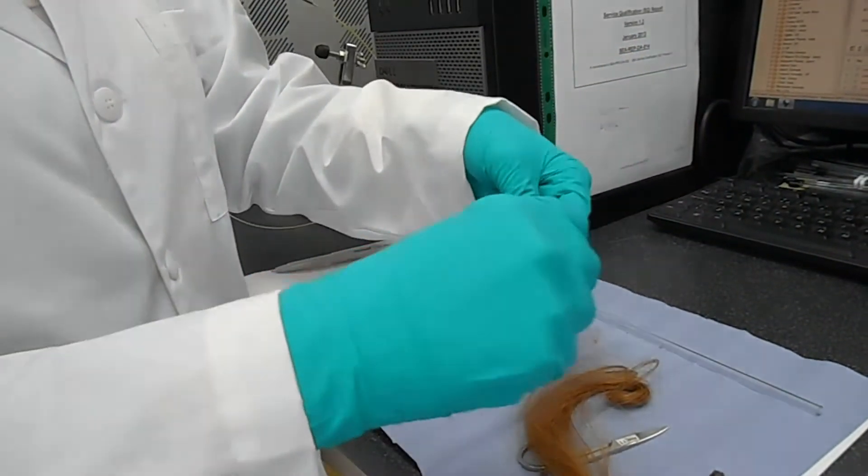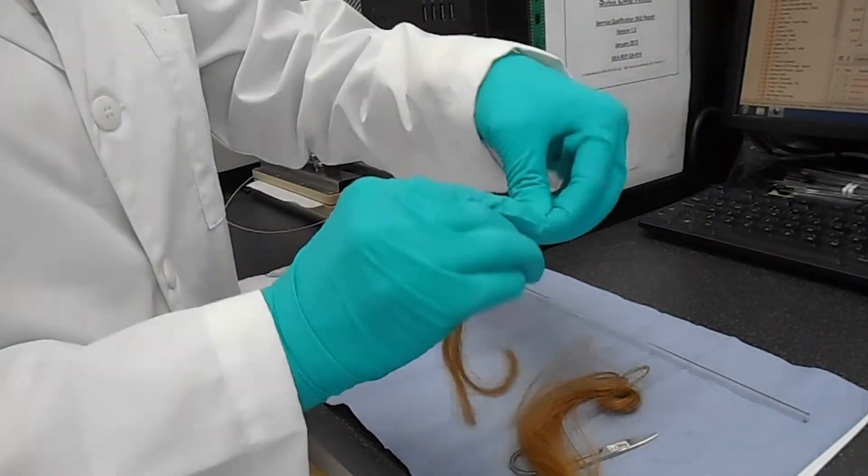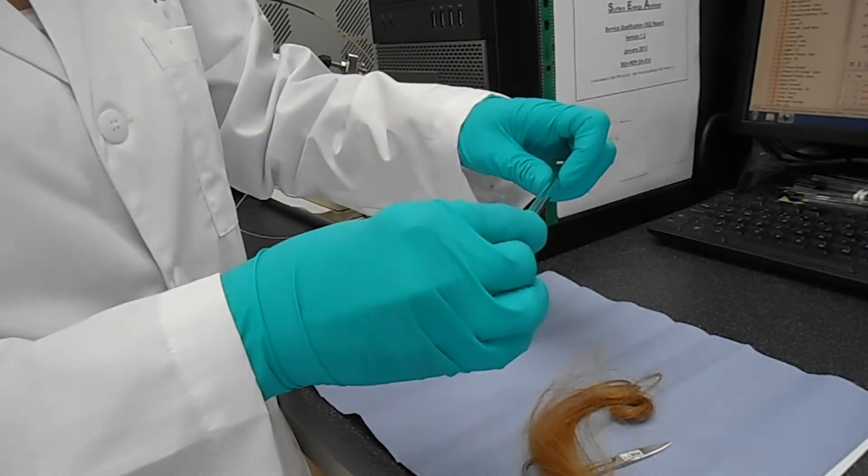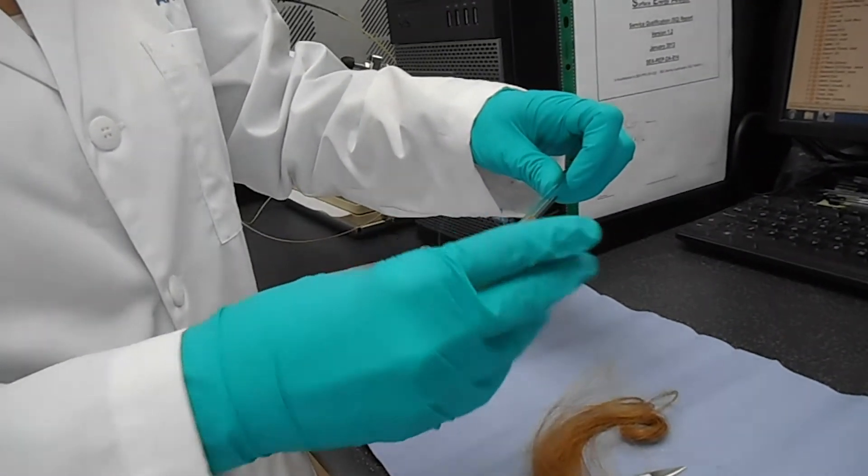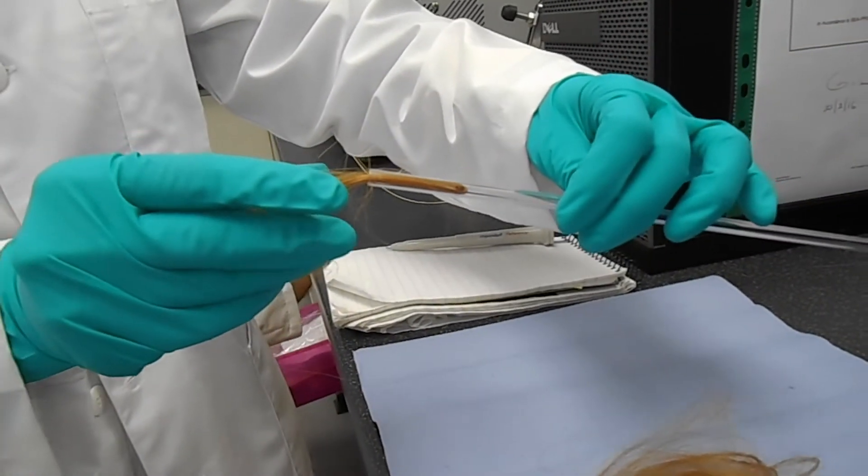After we cut the hair we can actually generate a loop by bending the hair and using this loop we can actually load the sample inside the column and we push it through the column.